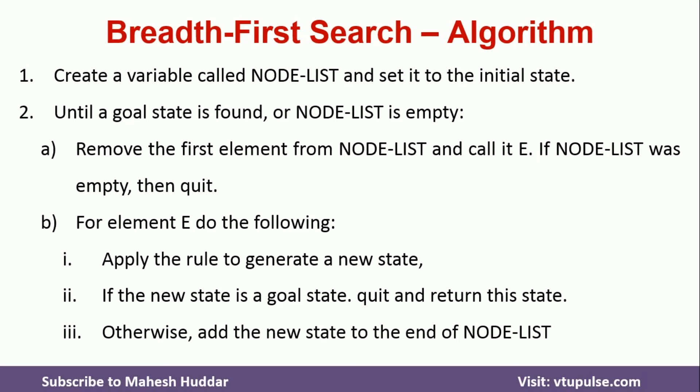We will take a very simple example to understand this algorithm. This is the graph given to us. In this case, A is the initial node and G is the goal node. We have multiple goal nodes — 1, 2, 3, and 4. Either of these goal nodes has to be reached. If we reach that particular goal node, we stop. If we are unable to reach any goal node, we say that it's a failure.